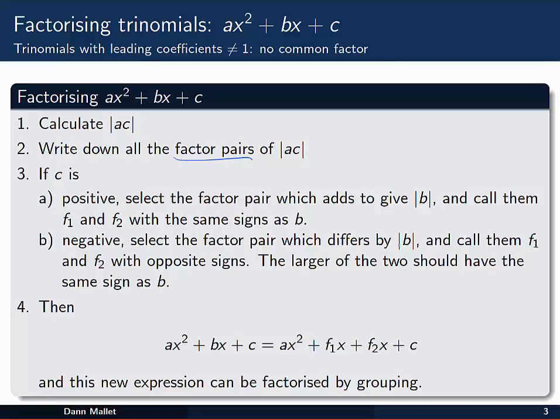If c is negative though, we select the factor pair which differs by the absolute value of b. Call them f₁ and f₂ and give them opposite signs. Specifically, the larger of the two should have the same sign as b.